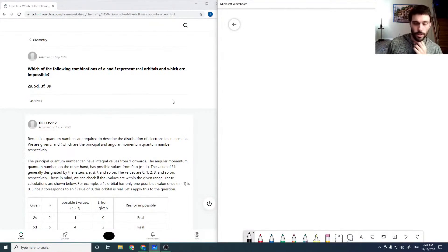Okay, so which of the following combinations of n and l represent real orbitals and which are impossible? So just to refresh here, when we name orbitals, say 2s, that means that n equals 2 and l equals 0.